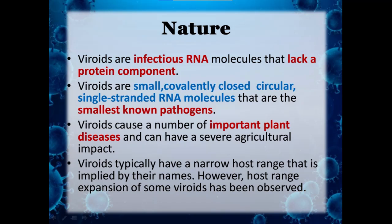The nature of viroids: viroids are infectious RNA molecules that lack a protein component. Viroids are small, covalently closed, circular, single-stranded RNA molecules that are the smallest known pathogens. Viroids cause a number of important plant diseases and can have a severe agricultural impact. Viroids typically have a narrow host range, as implied by their names — for example, the potato spindle tuber viroid infects potatoes.